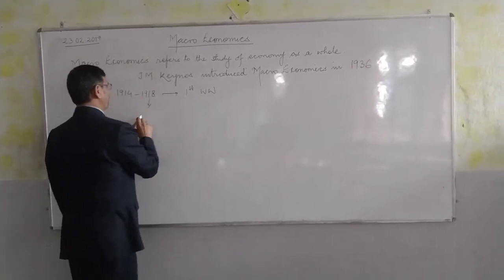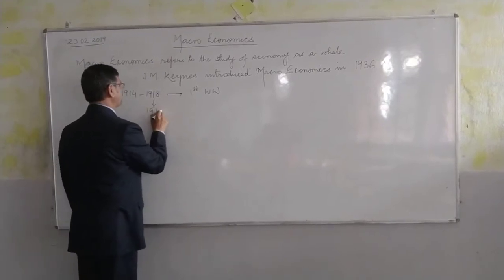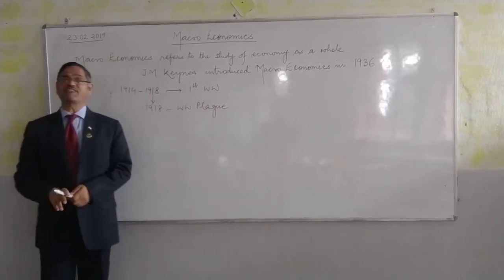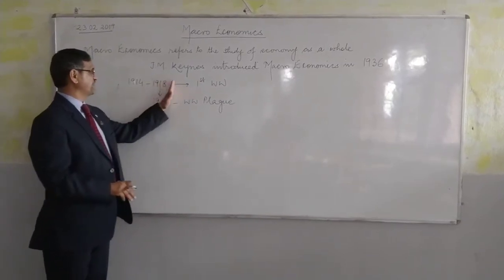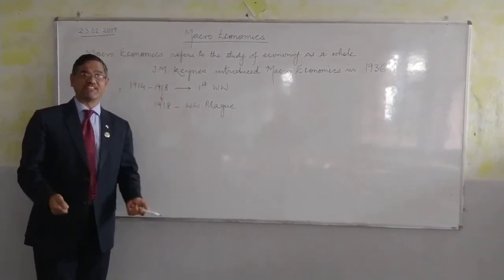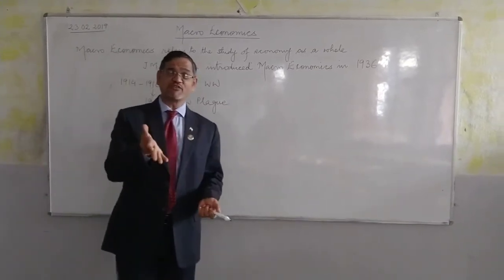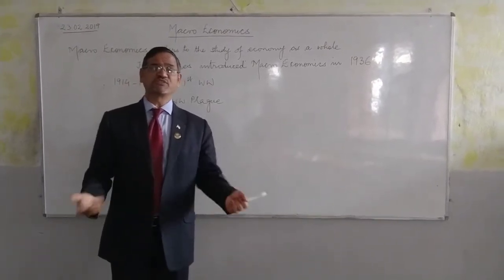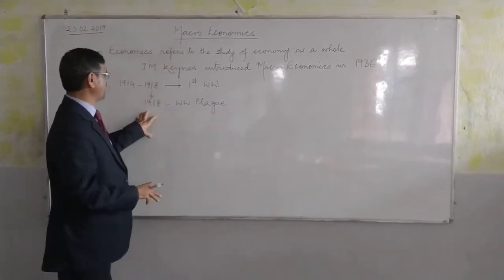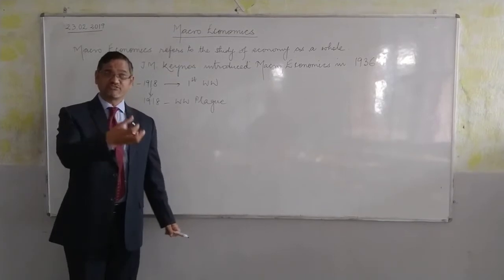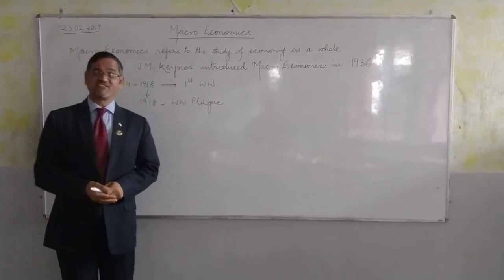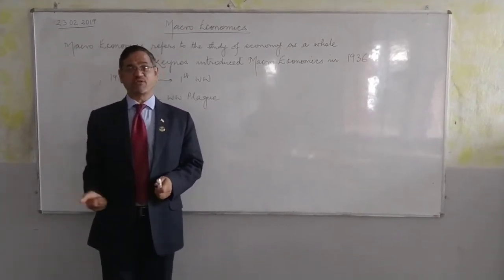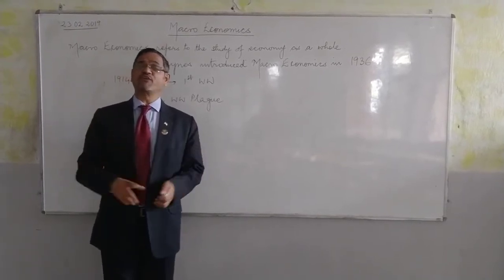In 1918, the World War ended. Demand for arms was drastically reduced, yet companies still had large stocks of arms in their godowns. They didn't have the money to transfer resources into consumer goods production. As a result, there was a lot of unsold arms stock in the godowns, but consumer goods were not being produced.